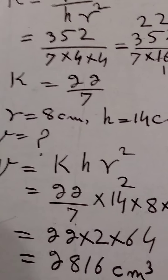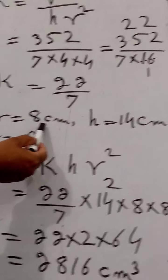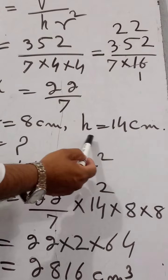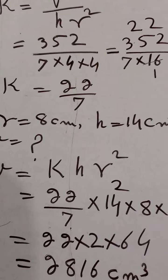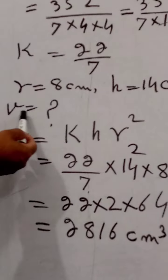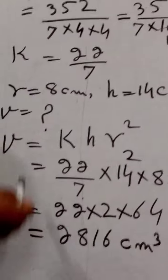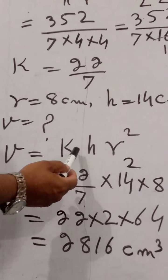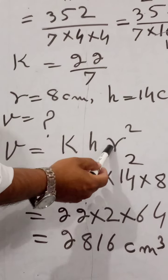The other cylinder, whose radius is 8 cm and height is 14 cm, we will find its volume which is required. As we know that, V is equal to K H R square.